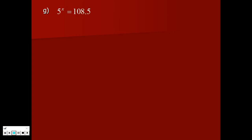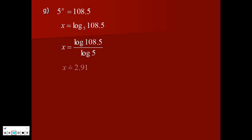Last special case: an example from other sections you may have solved by taking log of both sides and bringing x down using log law 3. That's fine. But here's a new method: the inverse of 5 to the power of is log base 5. If your calculator handles it, type log base 5 of 108.5 and you're done. If not, use the change-of-base formula: log 108.5 divided by log 5, which gives approximately 2.91. They're pretty equivalent methods.